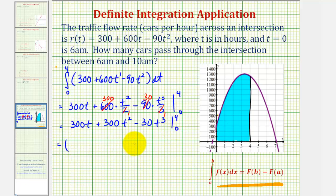So we'll have some quantity when t equals four minus some quantity when t is zero. So when t is four, we'll have 300 times four plus 300 times four squared minus 30 times four to the third. And then when t is zero, all these terms would be zero.